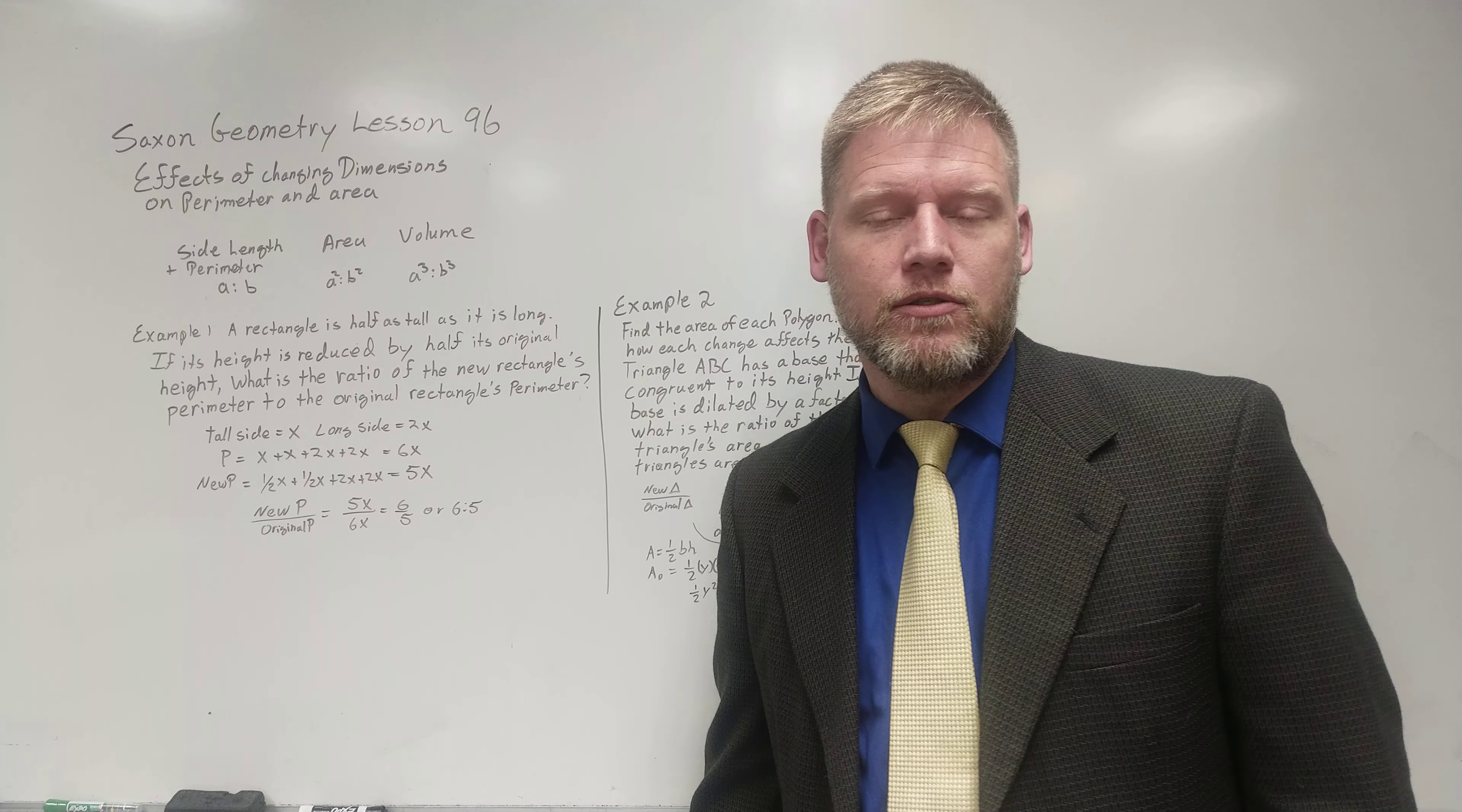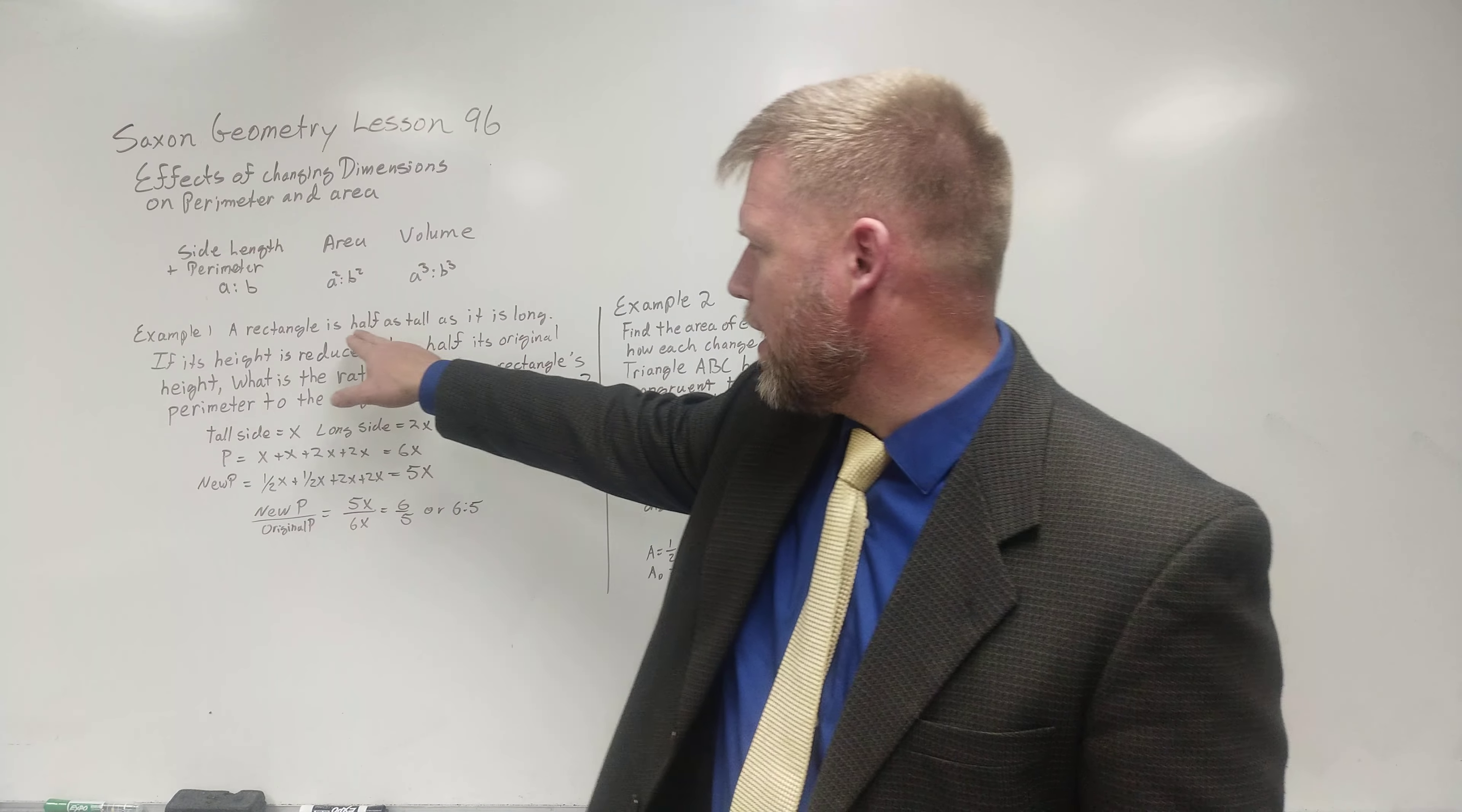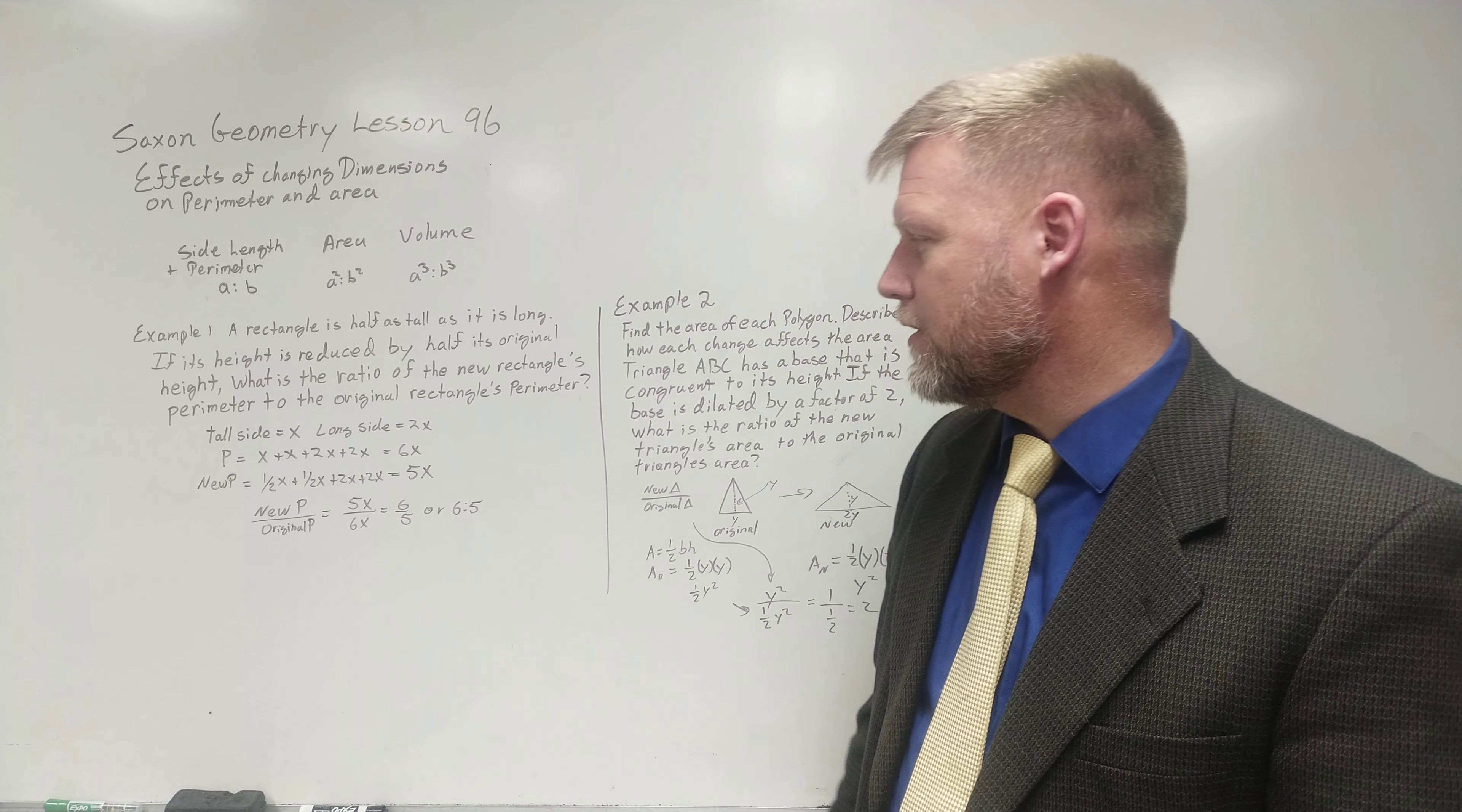Now, I don't like to work in fractions, nor do you. I understand that. So I'm going to go ahead and just say the tall side is x. The long side is twice. This is half as tall as it is long. The length has got to be twice as much as the height. So I'm going to say x and 2x.